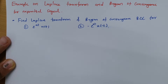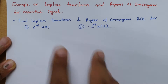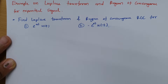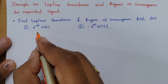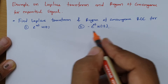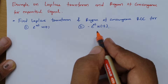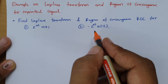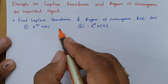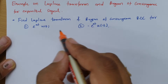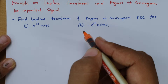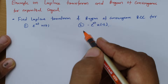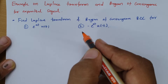One important thing from this question: to identify the ROC, we need to know first whether the given signal is a left-sided signal or a right-sided signal. You can see my previous session where I have explained examples of how a signal is right-sided and how a signal is left-sided, which will give you a clear understanding of how to identify that.